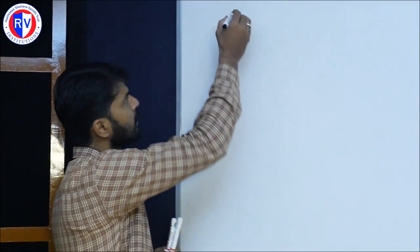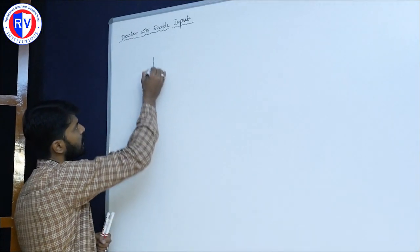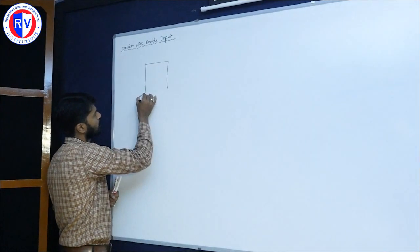In the last class we discussed the decoder without enable input and also some problems related to the active high decoder and the active low decoder. Today we will discuss the decoder with enable input. So now, decoder with enable input — for example, if I consider a 2-to-4 decoder.